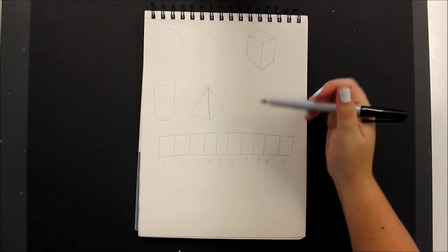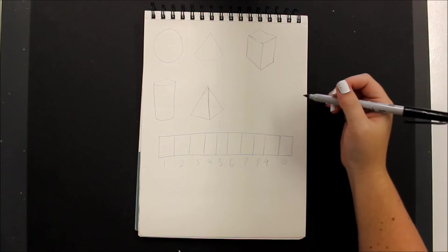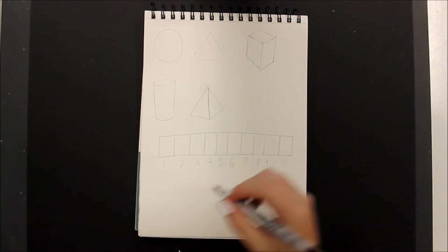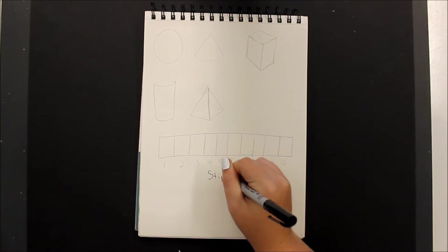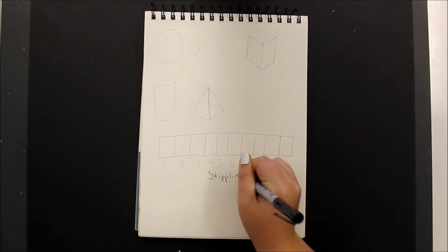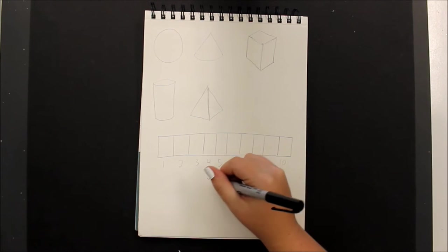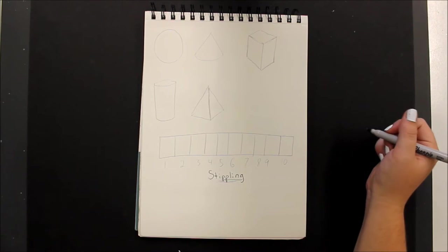Now, this is where you'll need your sharpie, and I want you to write the word stippling underneath your value scale. This is the technique that we're going to be practicing today.